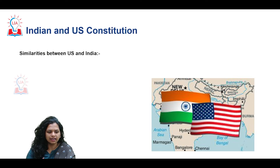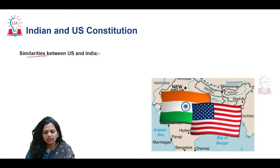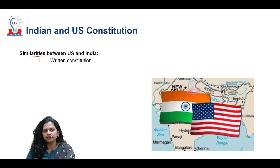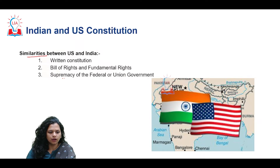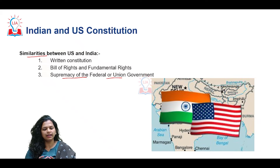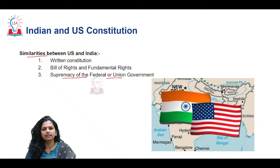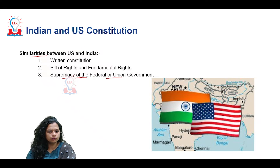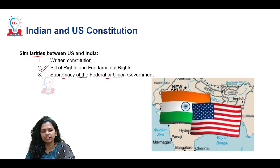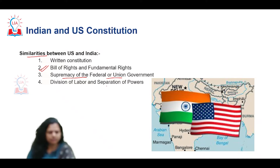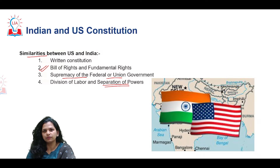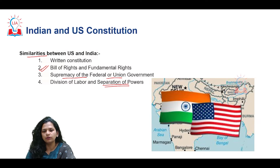We also have some similarities between the two constitutions. To begin with, both countries have a written constitution. Ours is one of the lengthiest in the world and theirs is one of the oldest. Both have a written constitution, essential primarily because we are trying to have supremacy of the federal or union government. The sharing of powers between central and state requires a written document. The Bill of Rights and Fundamental Rights are also influenced by the United States, as is separation of powers — though India has not completely adopted the way it is practiced in the US.